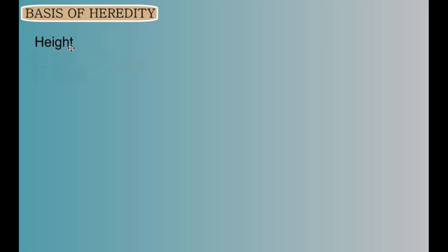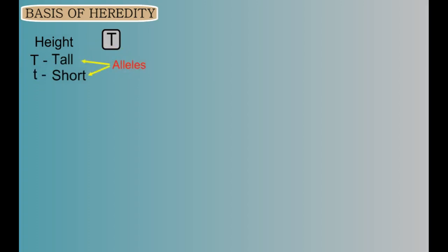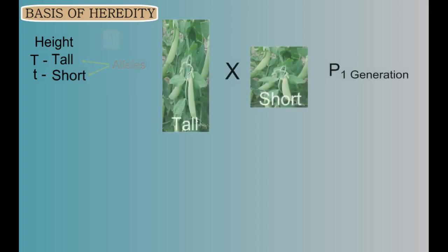Using this information, let's revisit these pea plants and look at them in a different way. We will use letters to represent the different alleles of our trait. One rule we need to follow is to use one letter for each trait. Convention holds that we usually pick the first letter of the dominant trait, so in our example we'll use T to represent height. This height gene comes in two forms — tall and short. The dominant allele gets the capital letter T, and the recessive allele gets the lowercase letter t.